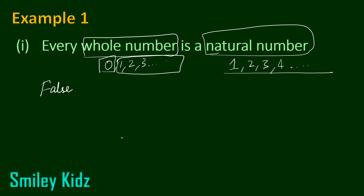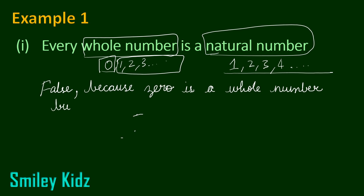So the answer is false. The reason: false, because 0 is a whole number but not a natural number. So every whole number is not a natural number, but every natural number is a whole number.